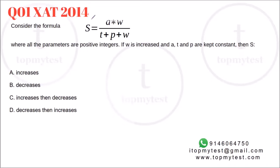The first one is from ZAT 2014. This says consider a formula S equals A times W divided by T plus P plus W. All the parameters are positive integers. If A is increased and A, T and P are kept constant, then S increases, decreases, increases then decreases or decreases then increases. Now, this is a constant times some variable divided by T plus P will again be a constant plus a variable.